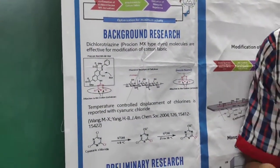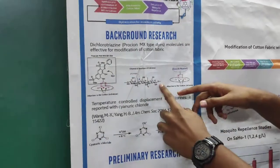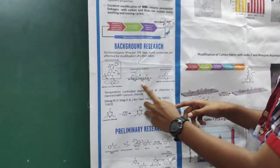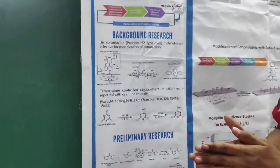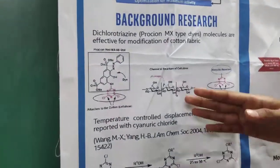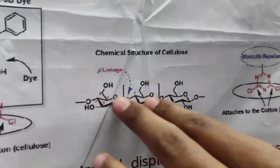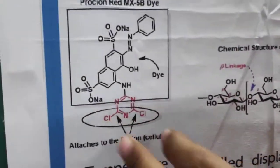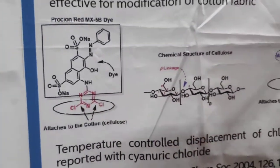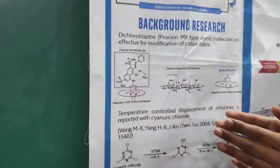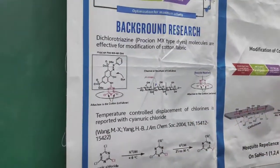Cotton is a cellulosic biopolymer with a massive number of hydroxyl groups. Using the displacement of hydroxyl groups and chlorines, the dyeing process takes place.